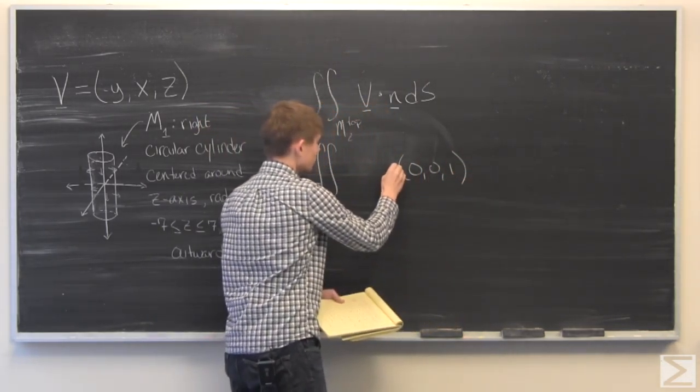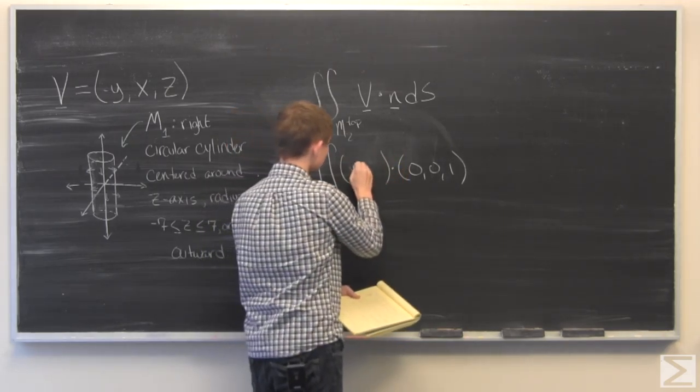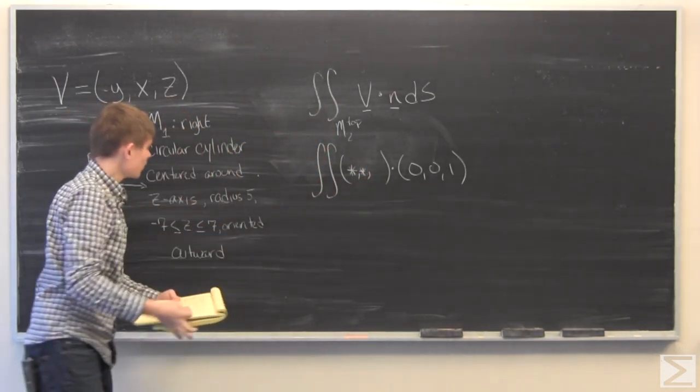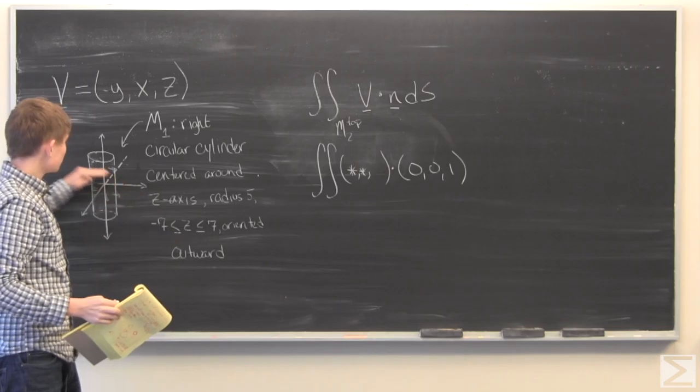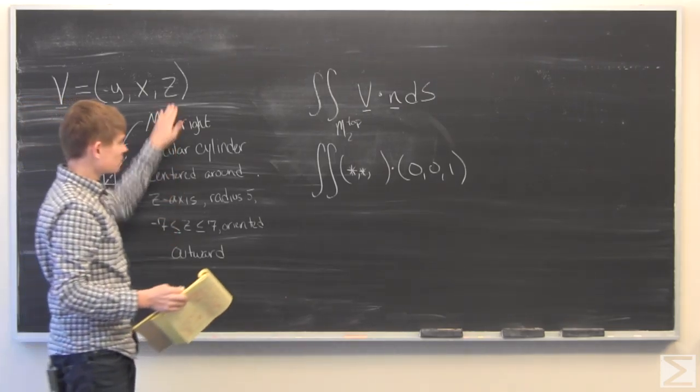And we're going to dot that with, we don't care about the first two components, and the last one is Z. However, since this is a disk for Z equal to 7, we can just plug in 7.